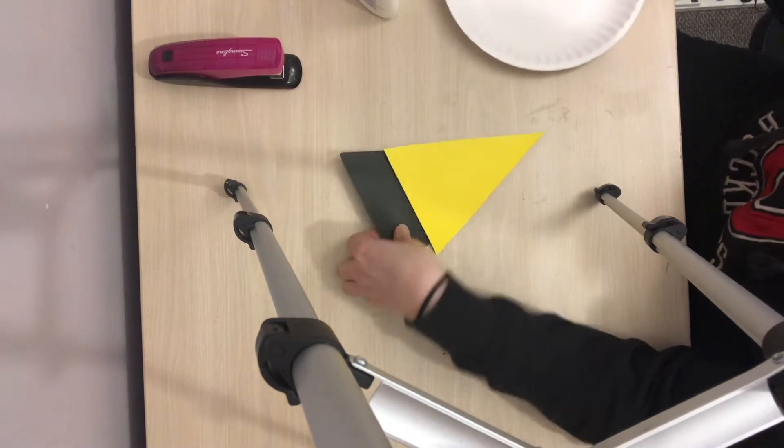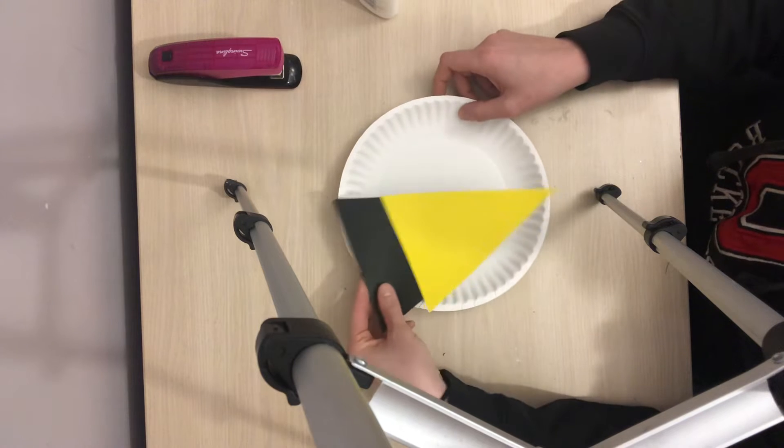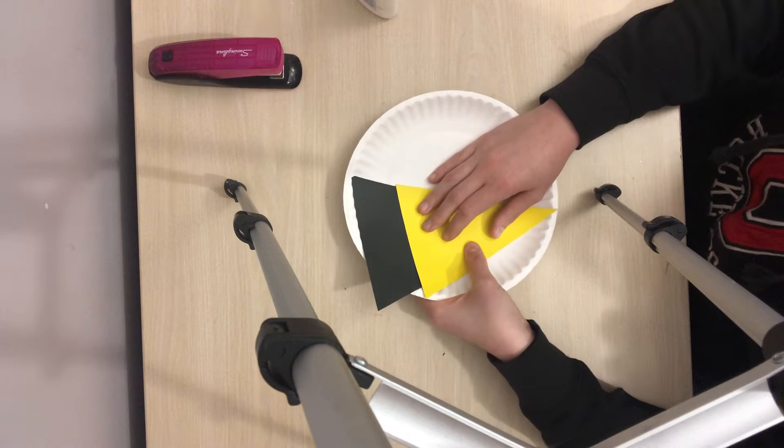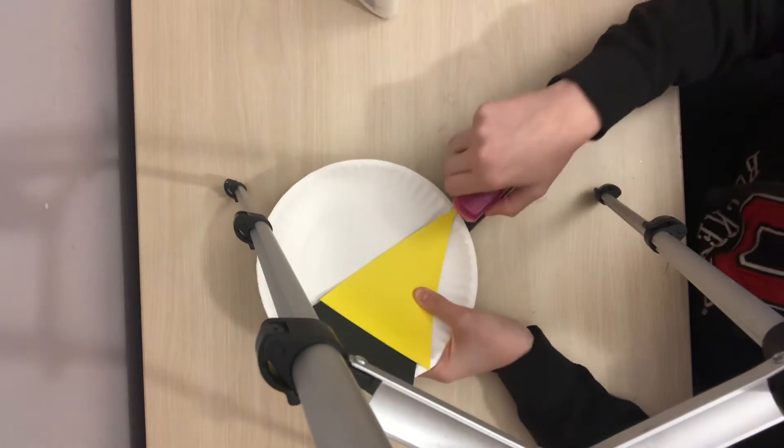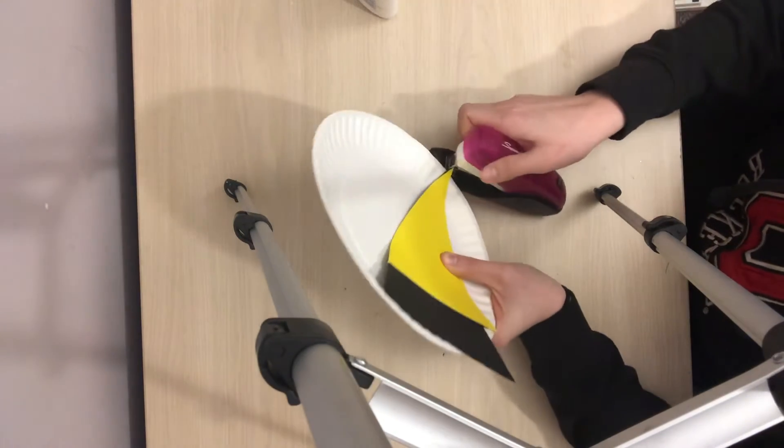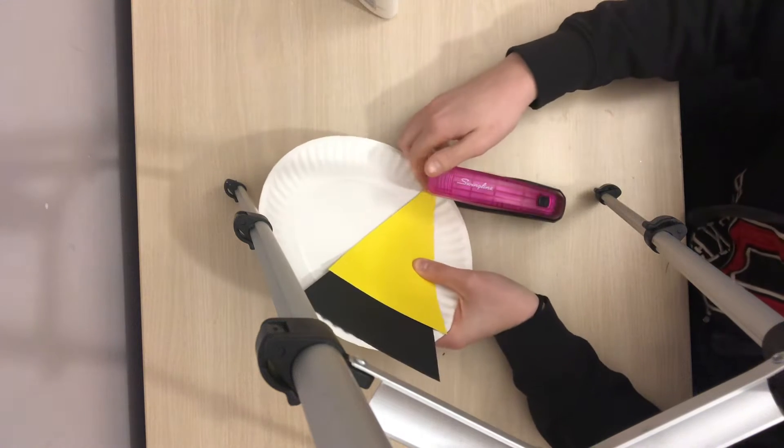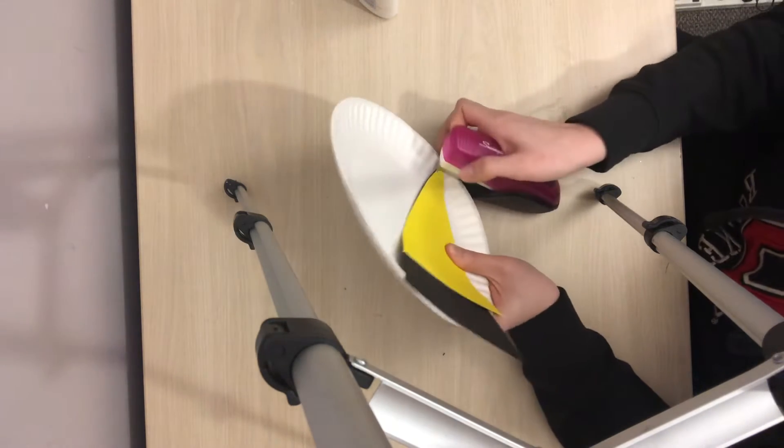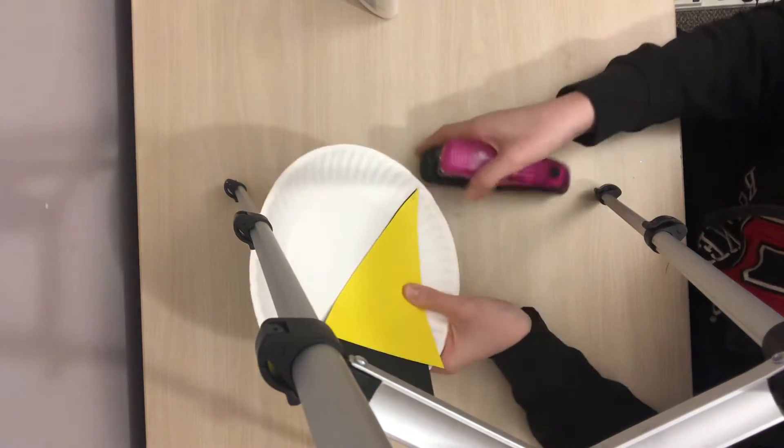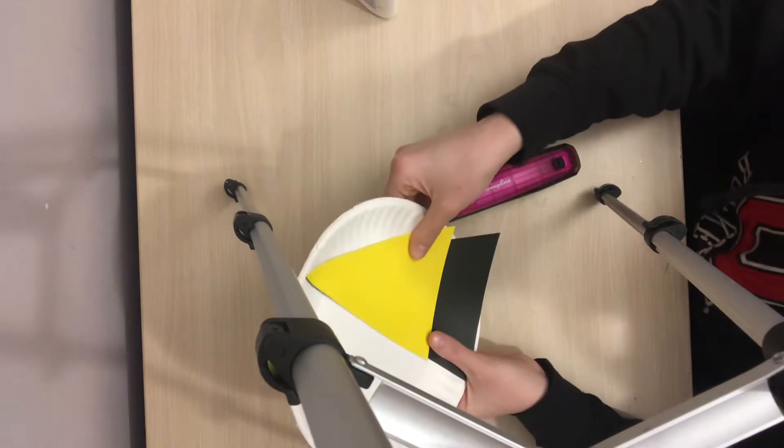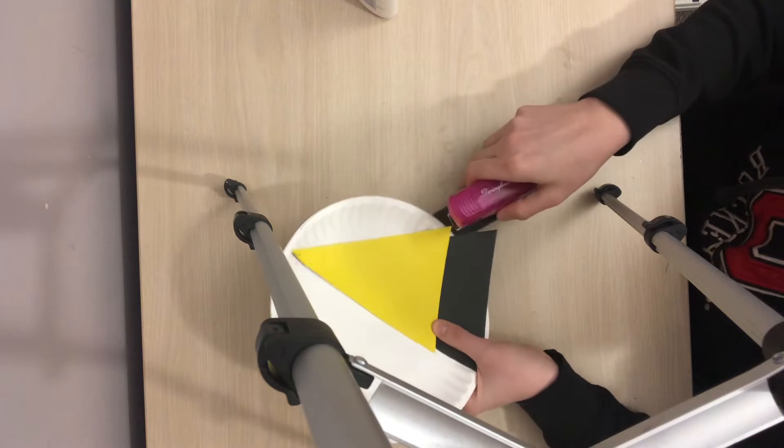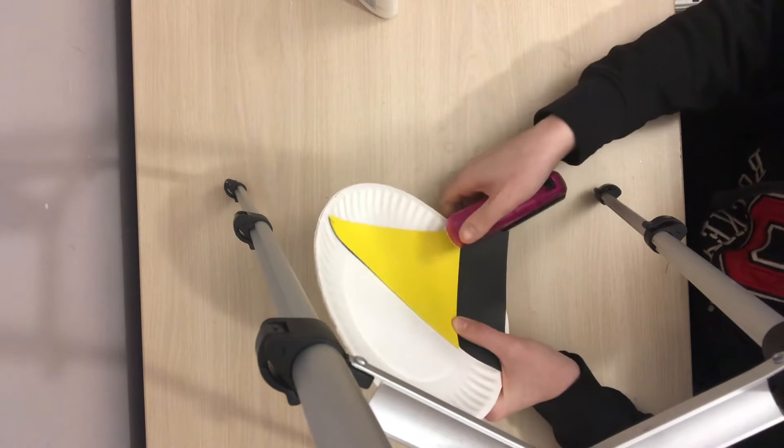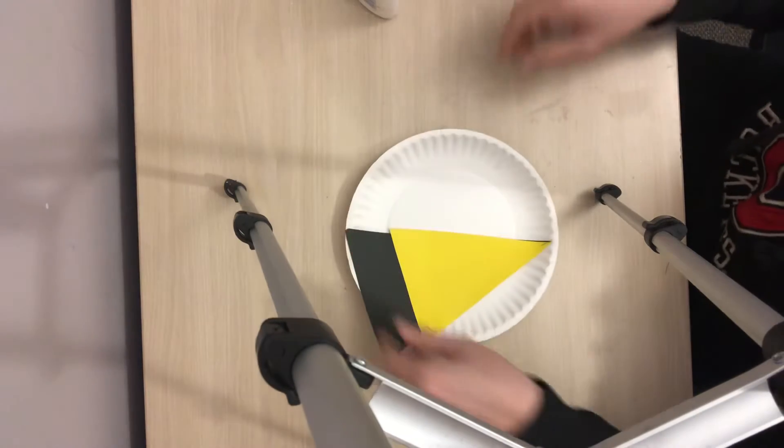Next, you're going to take your triangle and you're going to put it onto the plate. You can staple it or glue it. I'm going to staple it so I'm sure that it stays on, but you can do either. Pause here.